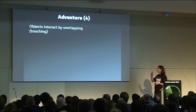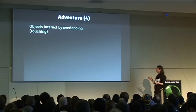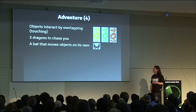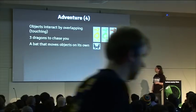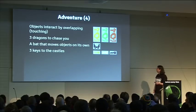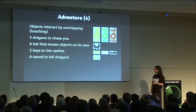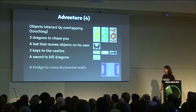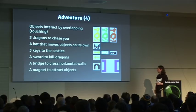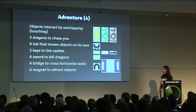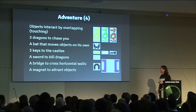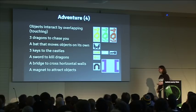All objects interact by overlapping — by touching — which was something very new back then. There are three dragons that chase you. One is the real enemy because it moves your object away — you can only carry one — so if you put something down, it steals it from you. For each of the three castles you've got a key. There's a nicely drawn sword to kill dragons, a bridge you can use to cross through horizontal walls, and a magnet to attract objects. The magnet is a workaround: you can accidentally drop objects inside a wall so you can't retrieve them, or the bat can do this, so the magnet lets you pull them back.